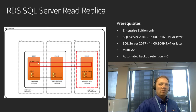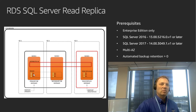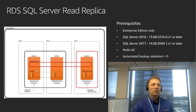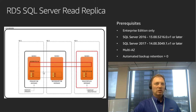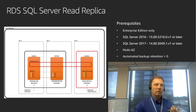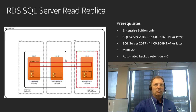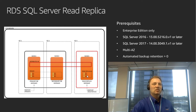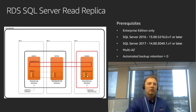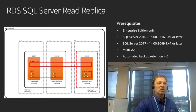Every transaction executed against the master — against any one of these databases, DB1, DB2, and so forth — will still be synchronously replicated over to the hot standby on node 2, and will be asynchronously replicated over to node 3. It's asynchronous replication only — you cannot change that behavior.